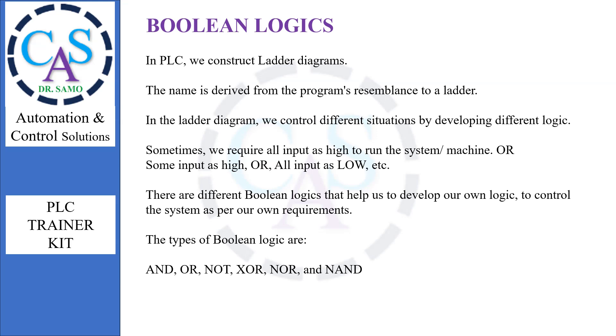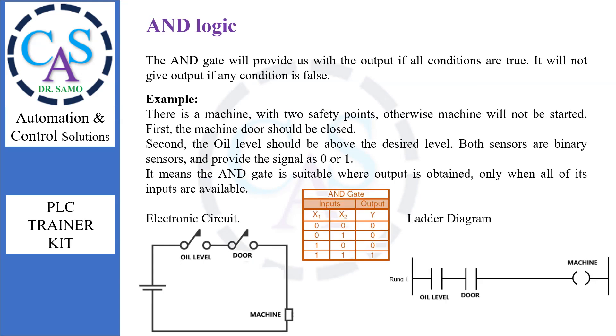The types of Boolean logic are: AND, OR, NOT, XOR, NOR, and NAND. Let's start with AND logic.